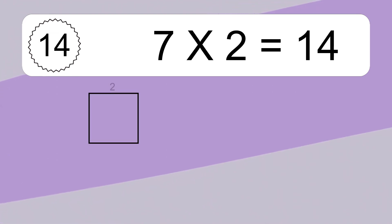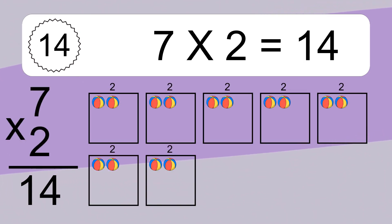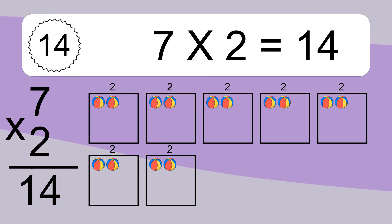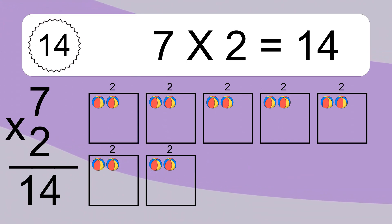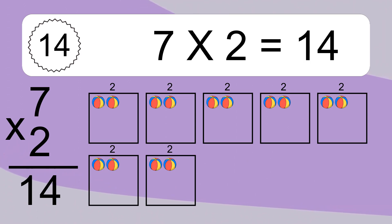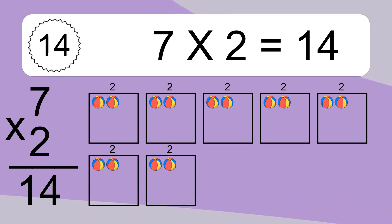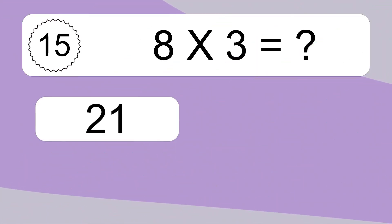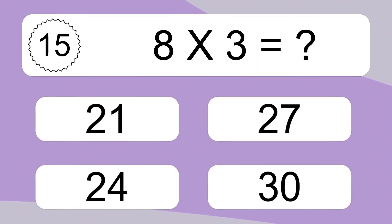7 times 2 equals what? 7 times 2 equals 14. We have 7 boxes, and each box has 2 colorful balls inside. If you count all the balls in all the boxes together, you will have 7 times 2 balls. This equals 14 balls.